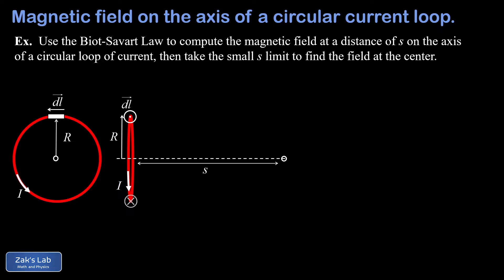Looking at this loop in perspective, dl is coming out at us, indicated by a dot inside a circle at the top of the loop. The current I is going down on the side closest to us, and at the bottom of the loop an x inside a circle means dl and I are pointing into the page. We've also labeled an observation point at a distance s from the center of the loop, lying on the loop's axis.